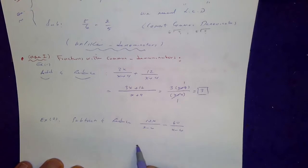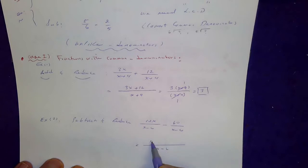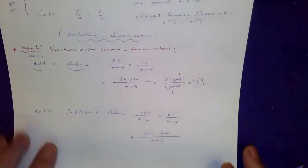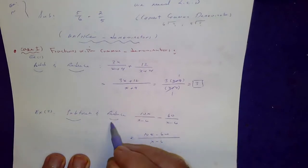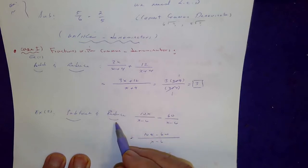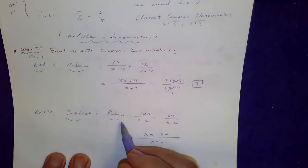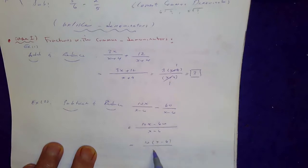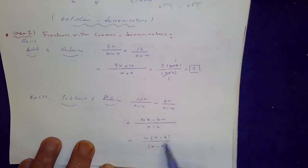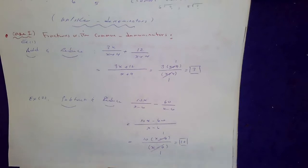The same thing applies for subtraction. The common denominator is x minus 6, but this time subtract the tops. These problems always have a follow-up instruction to reduce your final answer to its lowest terms. On top, factor out a 10. The common factor showed up, this guy divides into this guy once, so the final answer is 10.